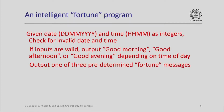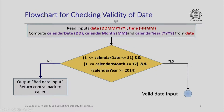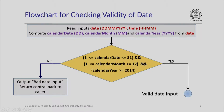Here is a simple flowchart for checking the validity of date. We read the inputs — date in date-month-year format and time in hour-minute format. From the date we compute the calendar date part (two-digit date), the calendar month part (two-digit month), and the calendar year (four-digit year). We then check if the calendar date lies between 1 and 31, the calendar month between 1 and 12, and the calendar year is greater than or equal to 2014. Notice the use of the double ampersand operator, which is the logical AND operation in C++.